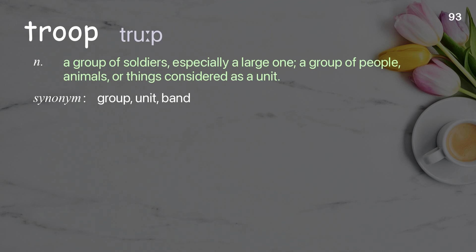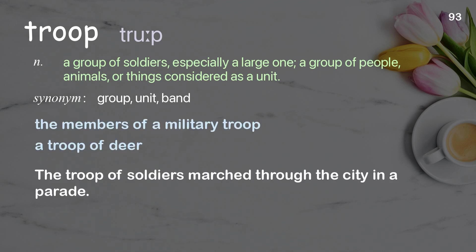Troop — a group of soldiers, especially a large one; a group of people, animals, or things considered as a unit. Examples: the members of a military troop, a troop of deer. The troop of soldiers marched through the city in a parade.